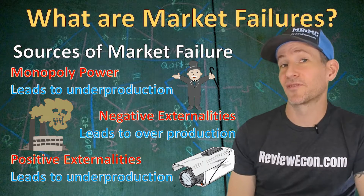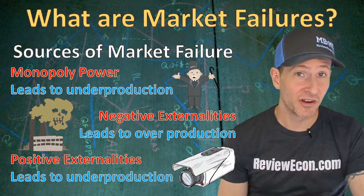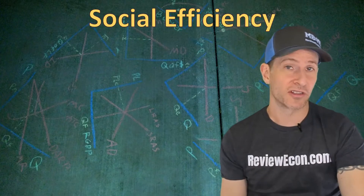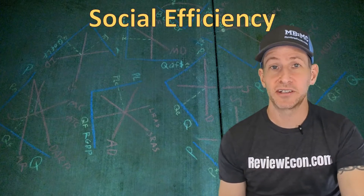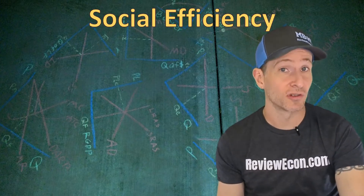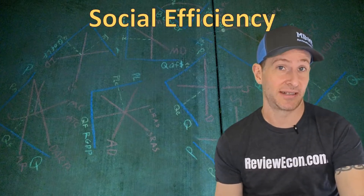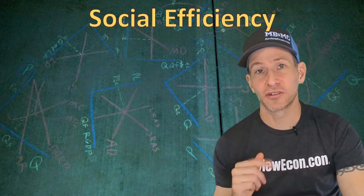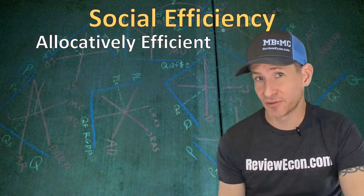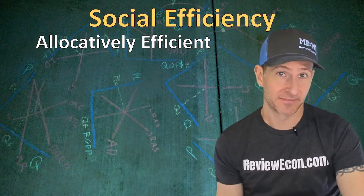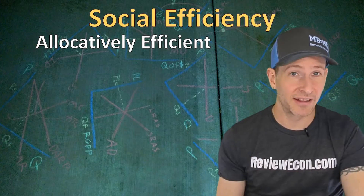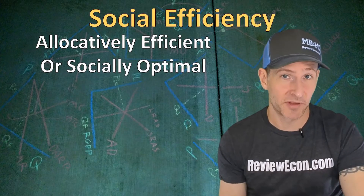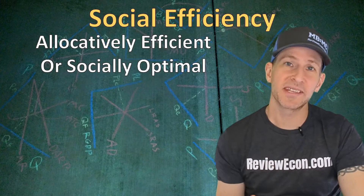If there are positive externalities where benefits fall on people who don't buy or produce the product, we are going to underproduce that good or service. Positive externalities come from things like security cameras in your neighborhood. The reason why we are concerned with market failures is because they don't create social efficiency. You've already learned a little bit about social efficiency when you learned the term allocative efficiency in previous units. In this unit, when we refer to allocative efficiency, we often call it socially optimal.